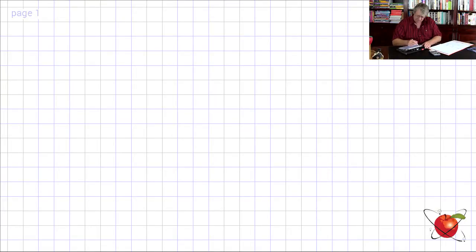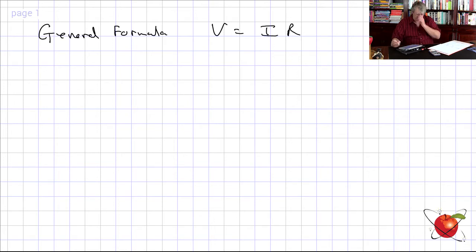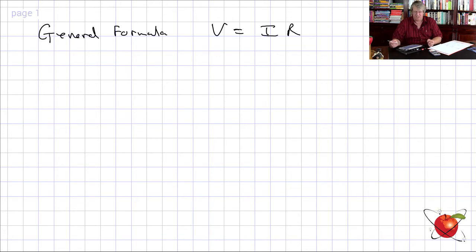Now we're going to start looking at circuits. Let's have a look at a general formula. I prefer it as V equals IR. I know some write it as I equals V over R, but V equals IR — you can remember that as VIR. So the general formula is V equals IR.